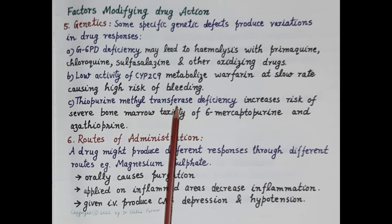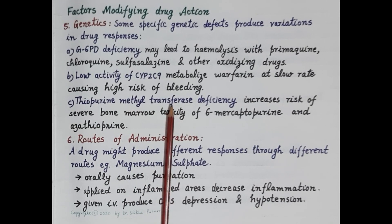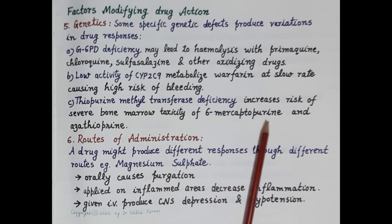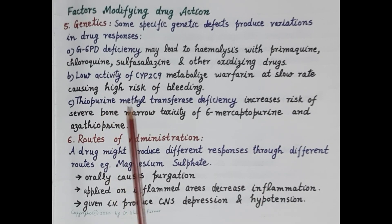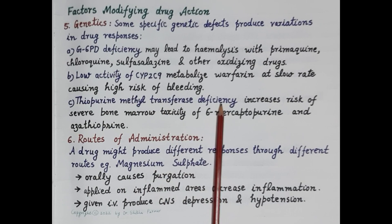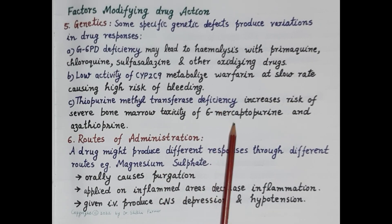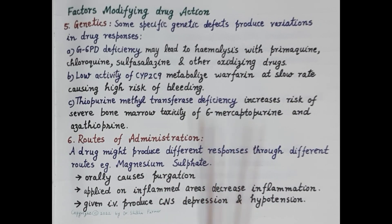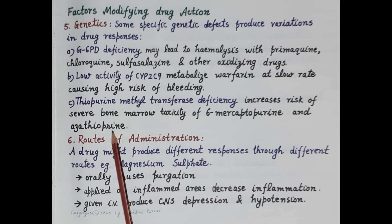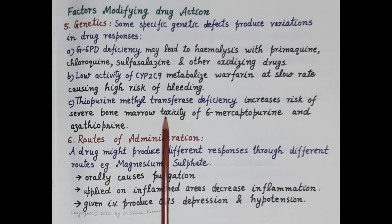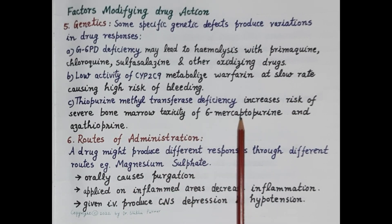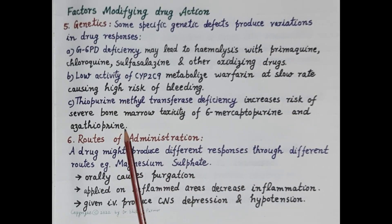Another example is thiopurine methyltransferase (TPMT), an enzyme responsible for the metabolism of 6-mercaptopurine and azathioprine. Deficiency of this enzyme reduces metabolism of these drugs, thereby increasing the risk of severe bone marrow toxicity with 6-mercaptopurine and azathioprine.